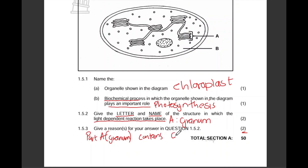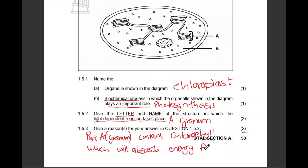Part A, which is the granum, contains chlorophyll which will absorb radiant energy from the sun. That should be enough. Thank you so much for watching — remember to subscribe, like, share, comment down below, and all the best for your test.